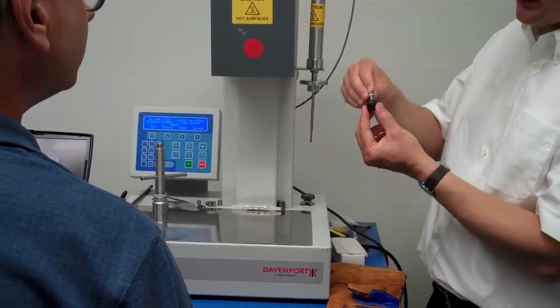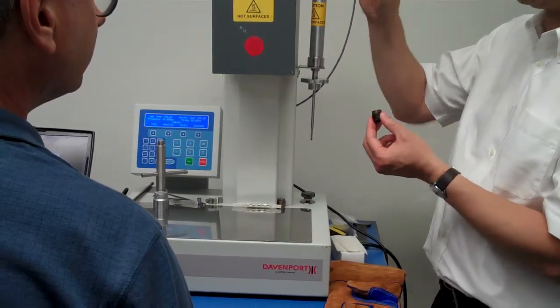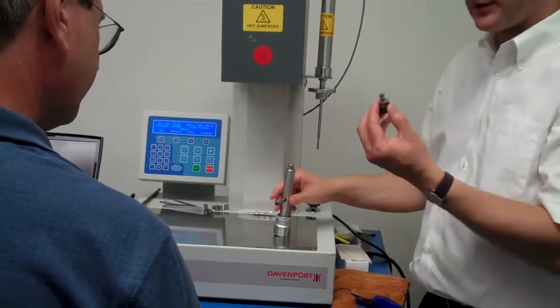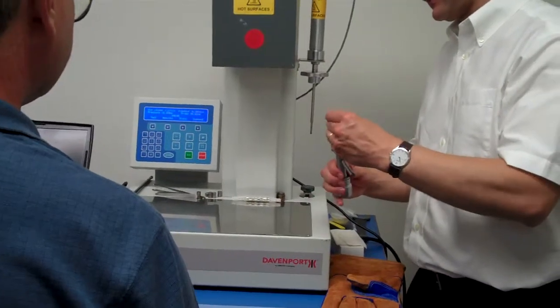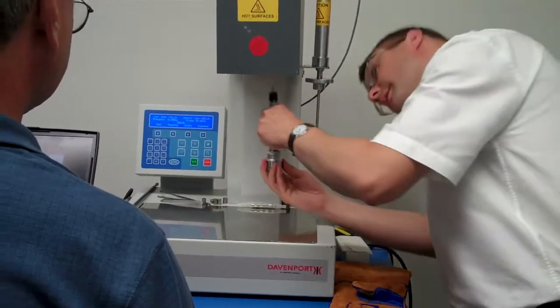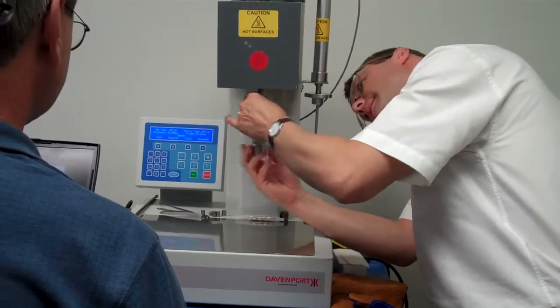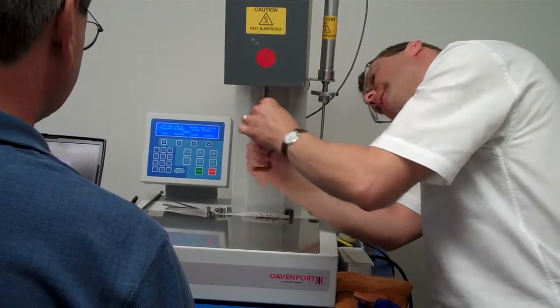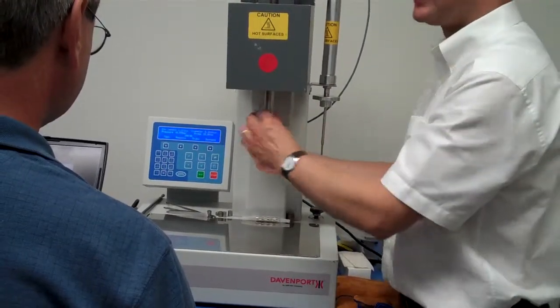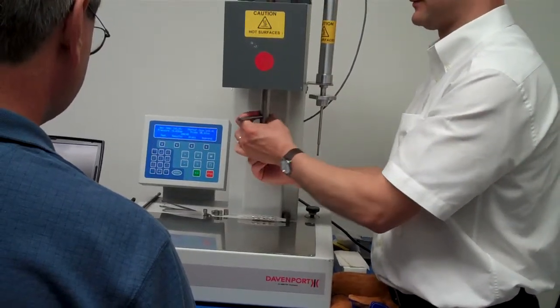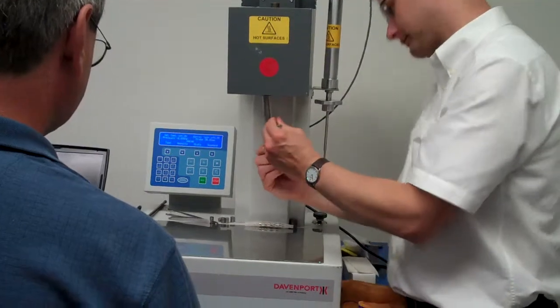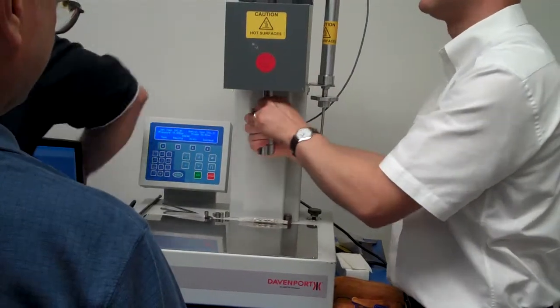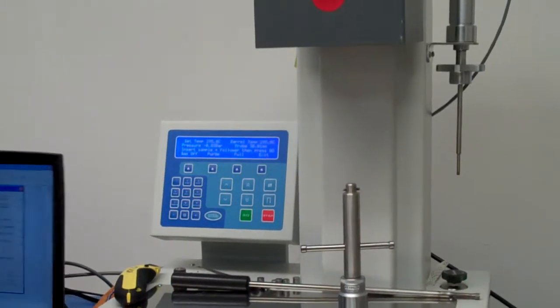The die goes in the holder with the seal towards the top and we use this tool, screw it in. We don't need to do this really tight, it just needs to be finger tight.